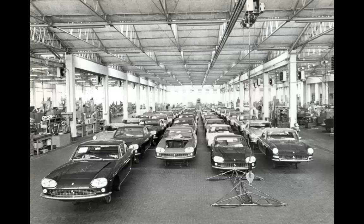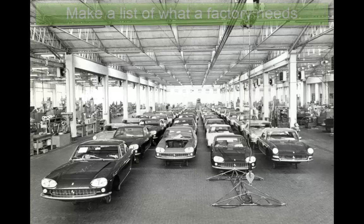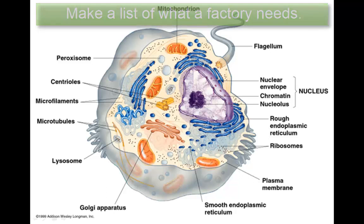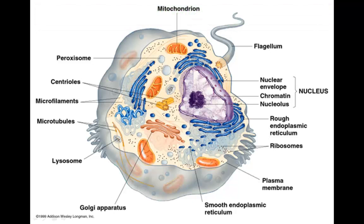Consider a factory. What does a factory need in order to successfully produce a product? Pause the video and make a list of everything a factory might need. In the same way, we're going to consider a cell as a factory.